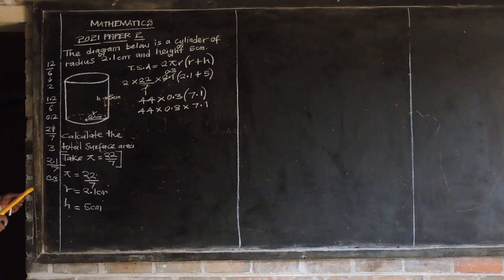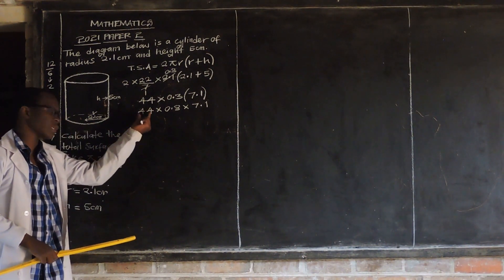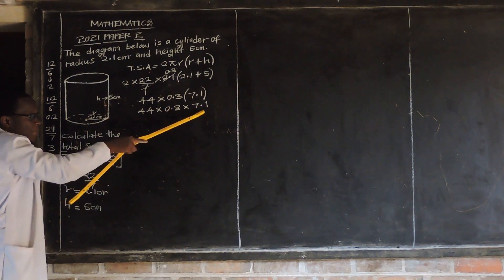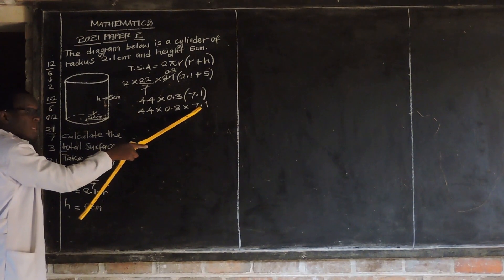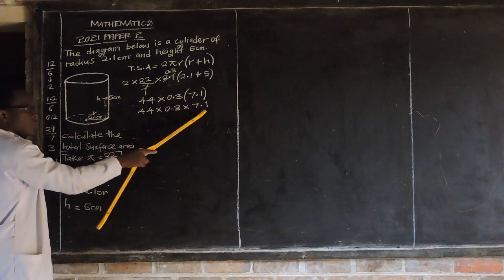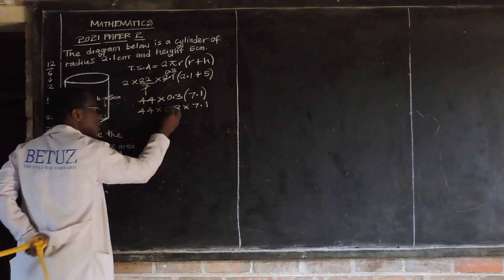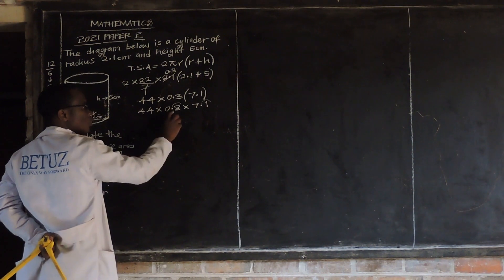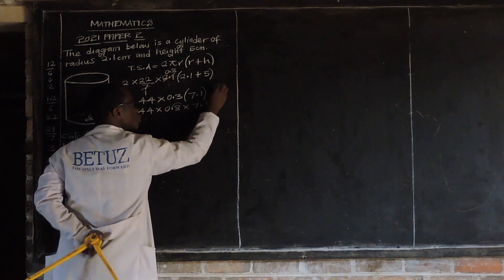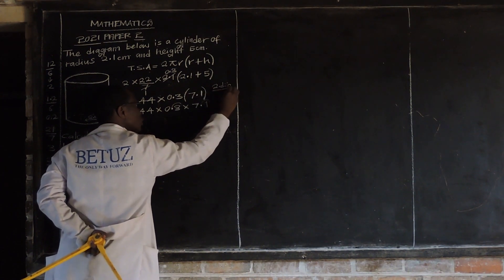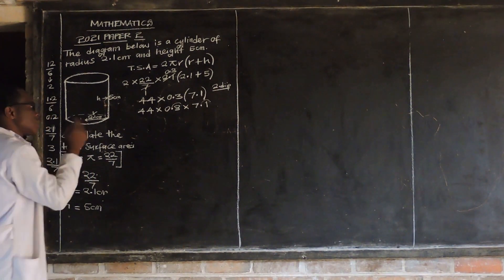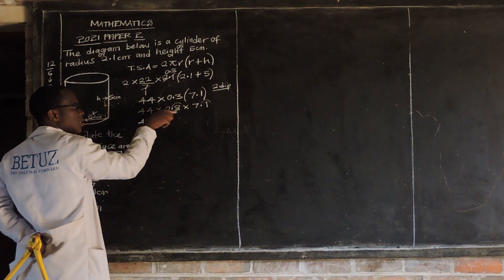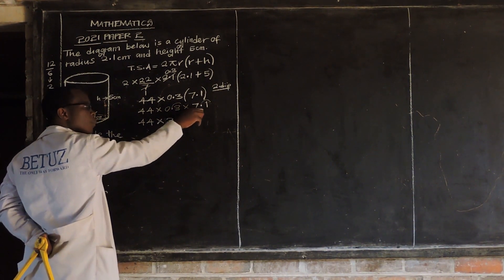Since we're allowed to make our work easier, we have 44 as a whole number, and 0.3 and 7.1 as decimal numbers. The best thing to do is treat these as whole numbers temporarily, but take note of the decimal places you are ignoring. In this case, 0.3 has one decimal place and 7.1 has one decimal place — that's two decimal places total. So we treat them as 3 and 71 respectively.